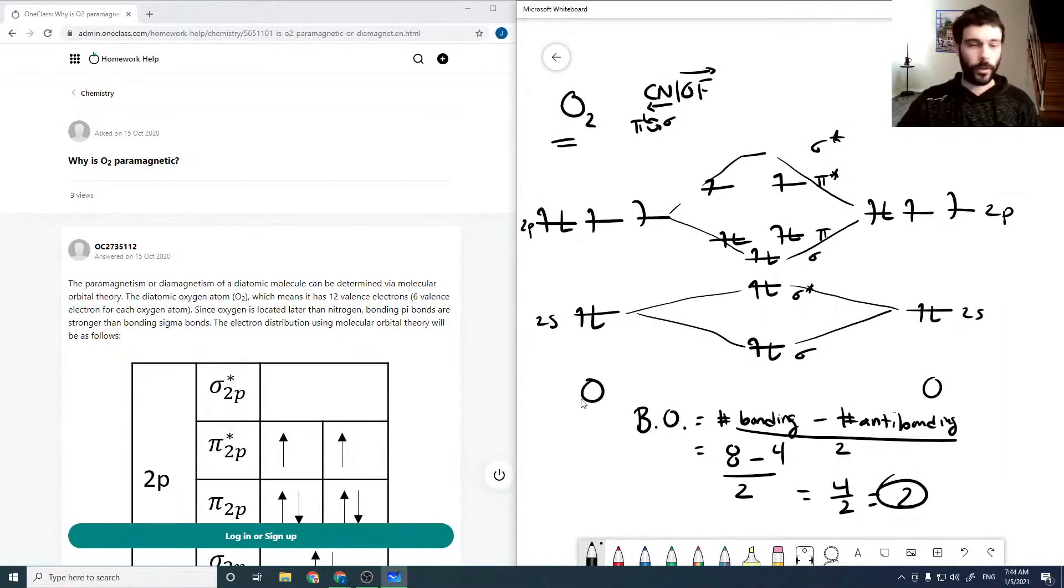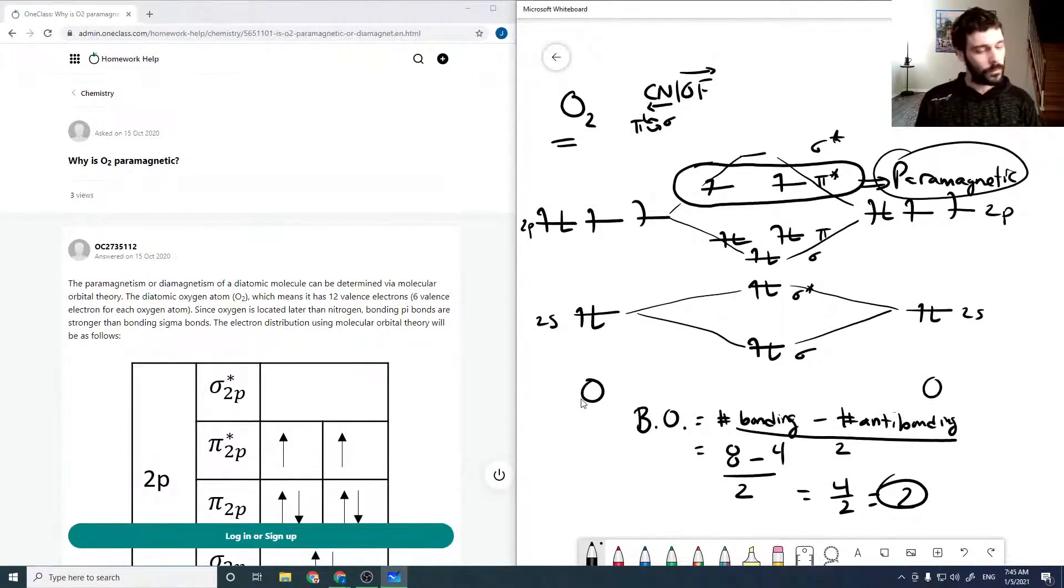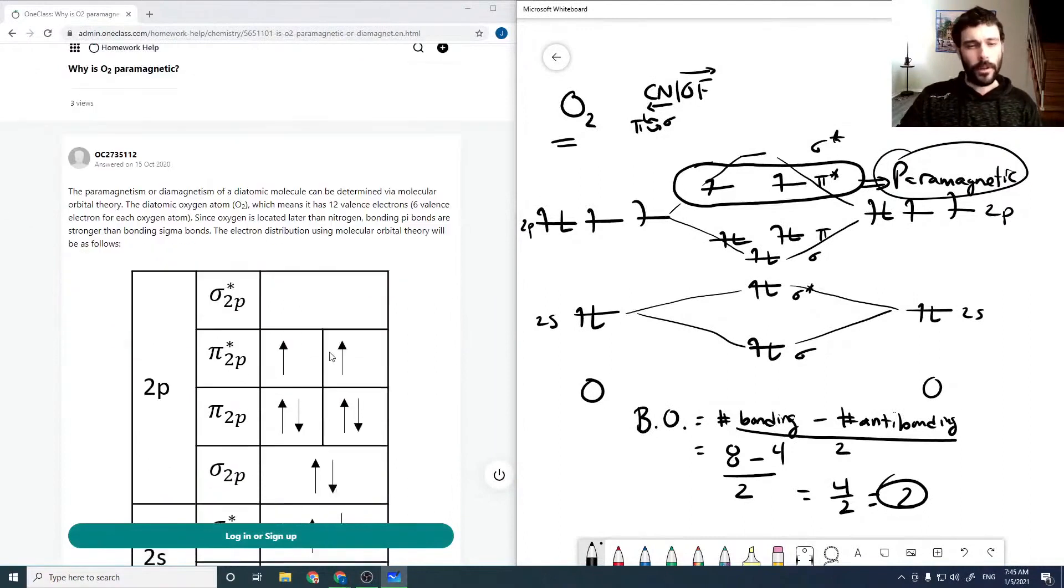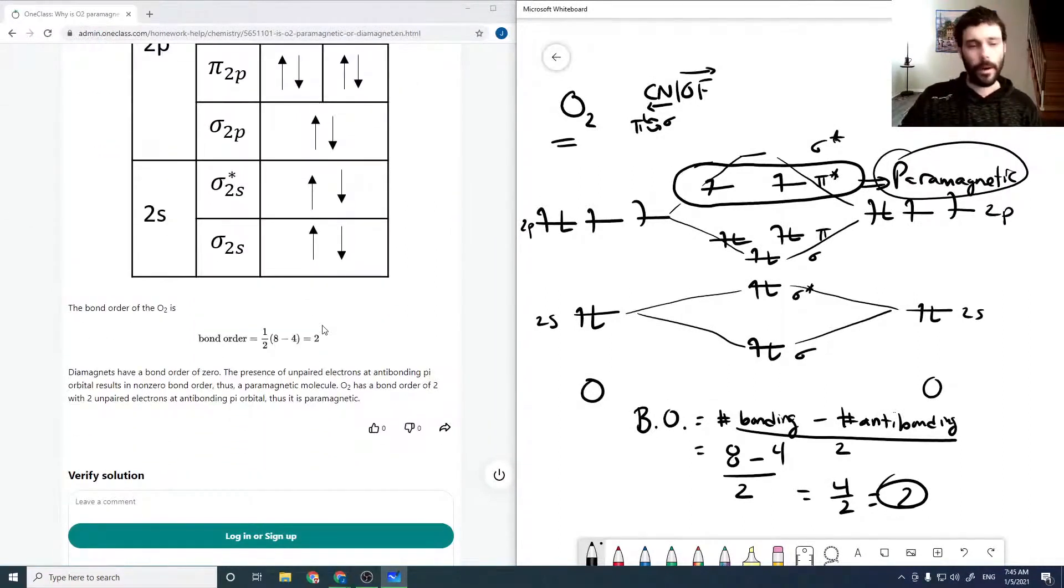But for the question, why is it paramagnetic, all we actually need to see are these electrons here. And so because we have unpaired electron spins, that means we've got a paramagnetic molecule. And that's all that matters. So if the spins are unpaired, then it's paramagnetic. If the spins are paired, then it's diamagnetic. So in this case, we have an unpaired spin there, and so it's paramagnetic.